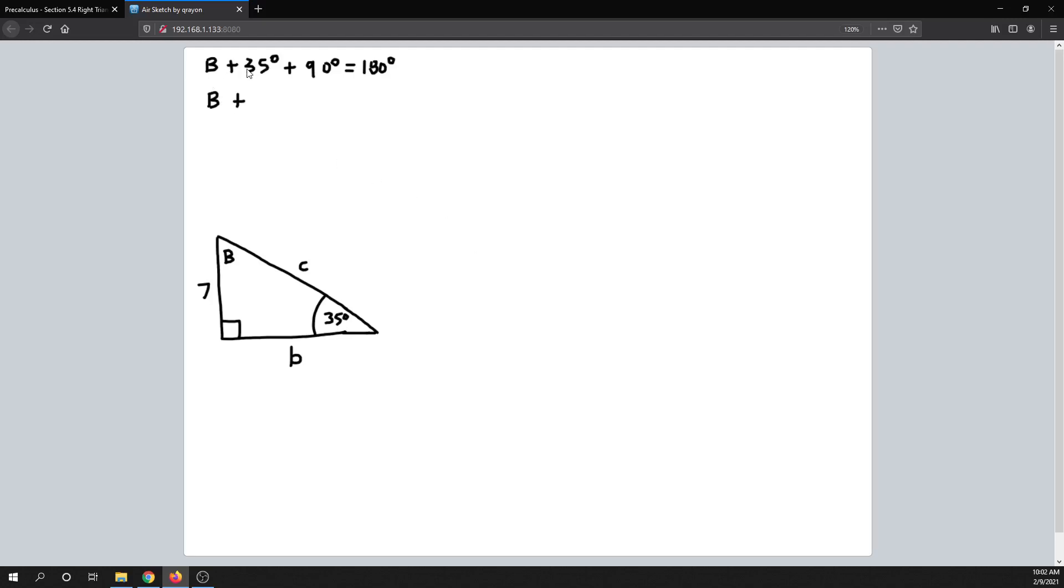Okay, so just solve this little equation now. 90 plus 35 is 125, and then subtract 125 from both sides. And we get that B is equal to—let's see, is that 55 degrees. So 180 minus 125 is 55.